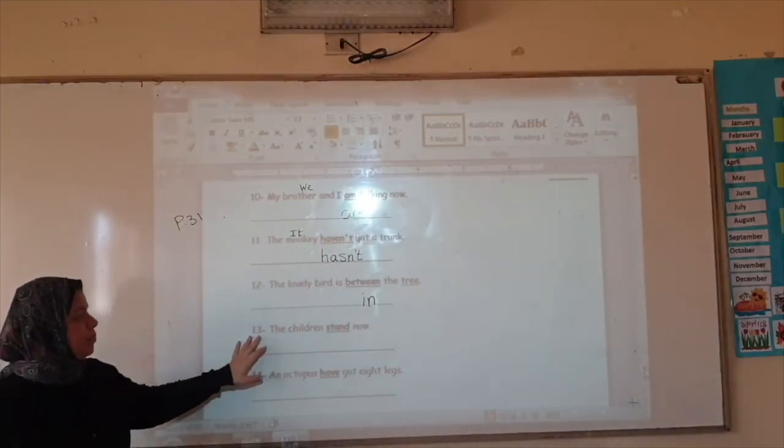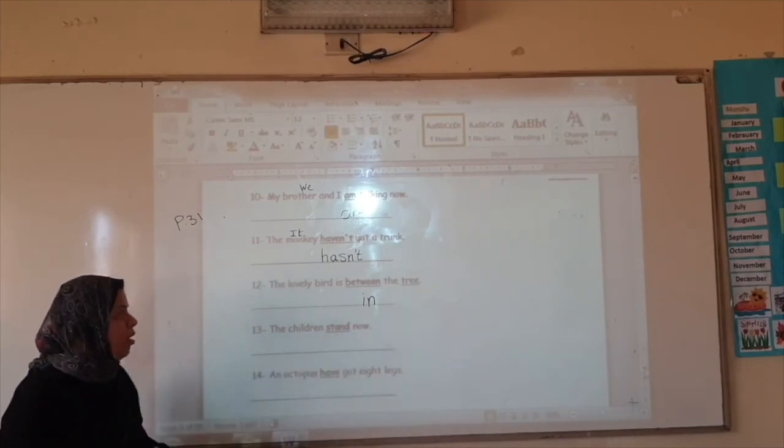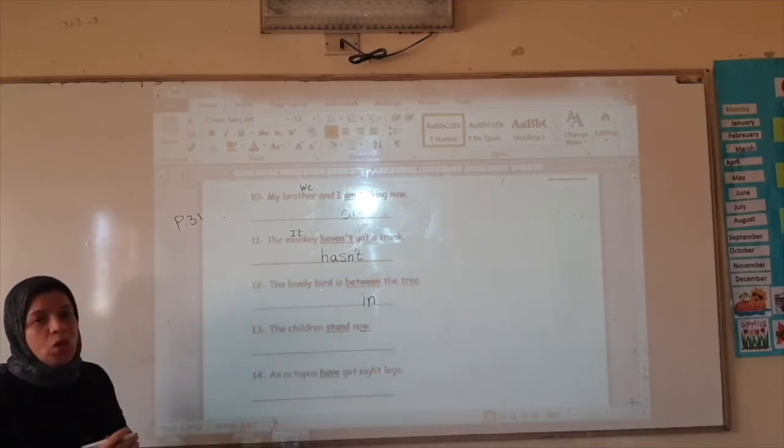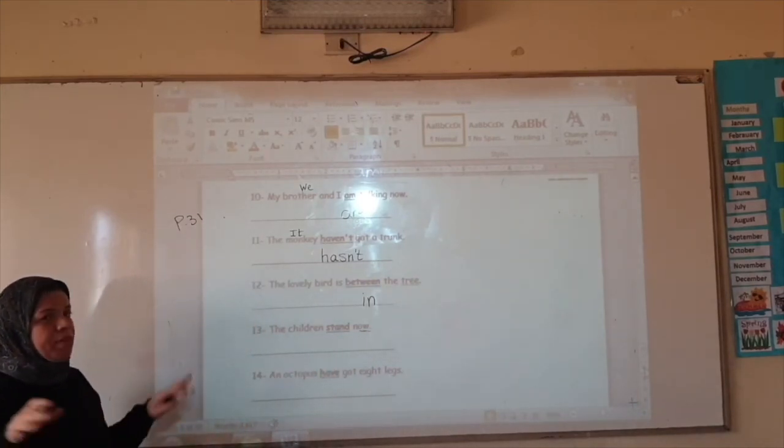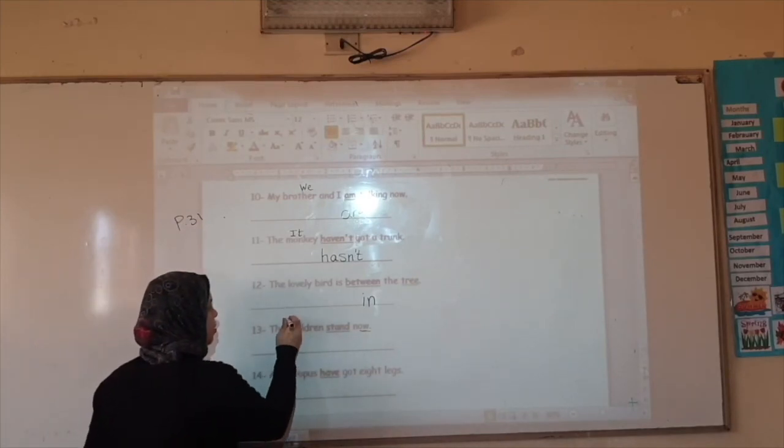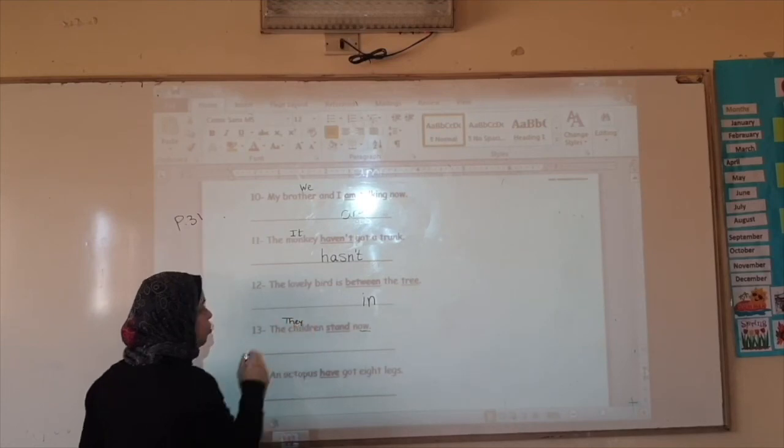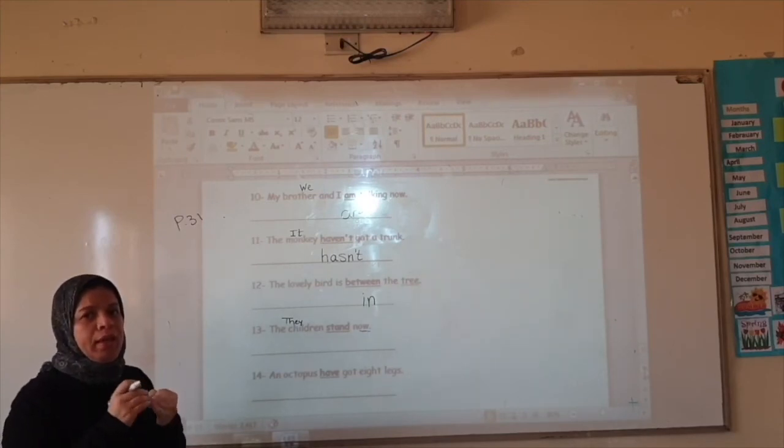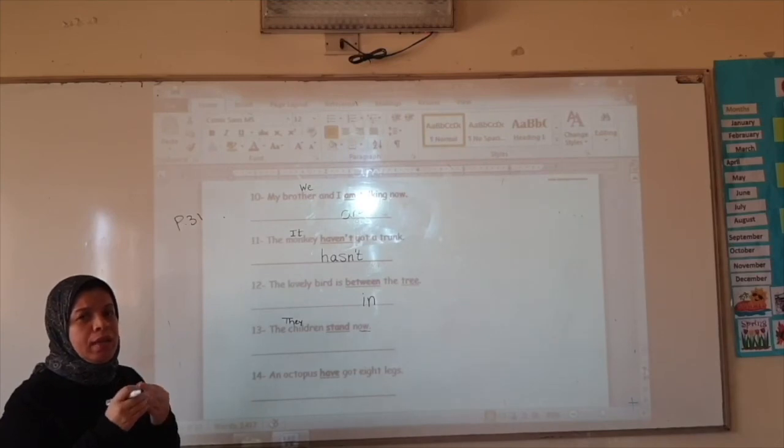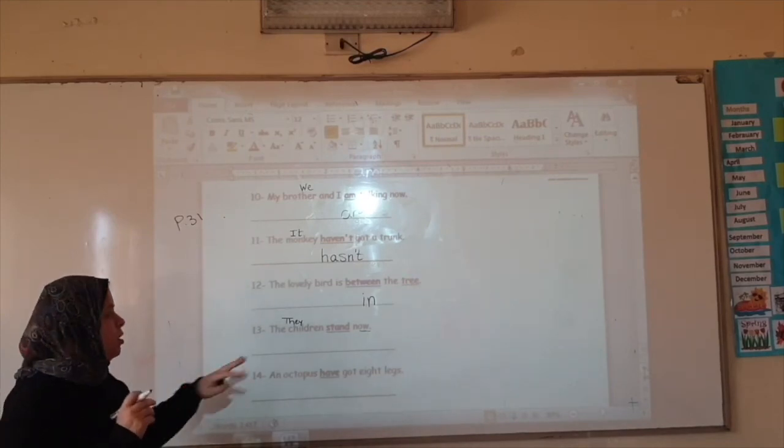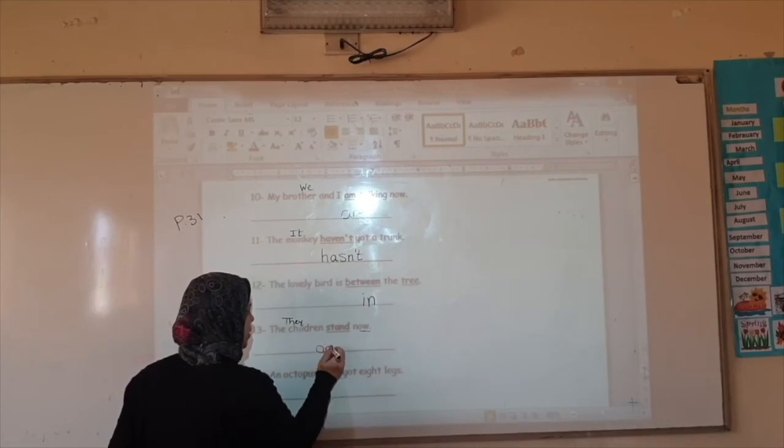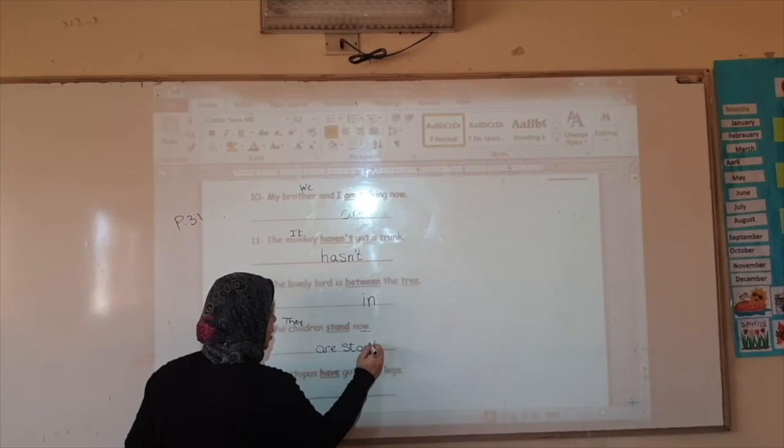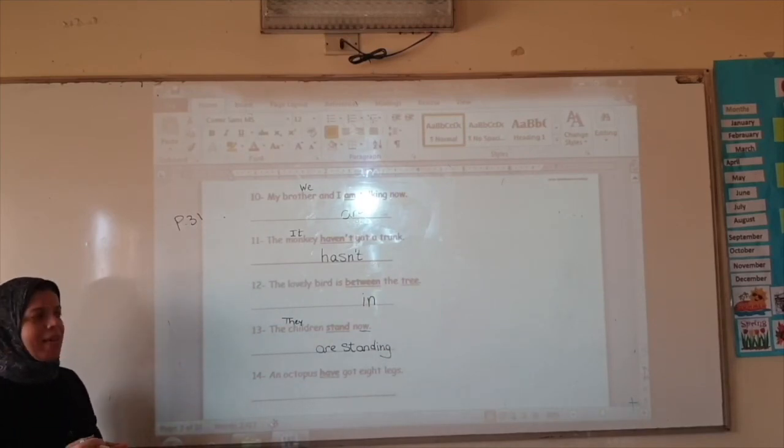Number thirteen. That children stand now. I have the word now. So this is present continuous. We have the two wings of the butterfly. Children - they. What do I use for they? Am, is or are? Not am, because we only use am with I. He and she and is. I'm going to use are. They are, we are, you are. So I'm going to say they are standing. And put ING. The children are standing now.